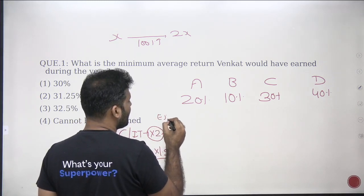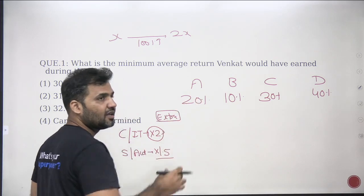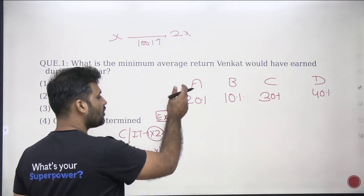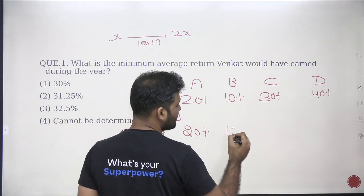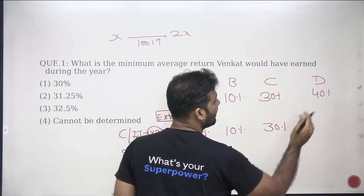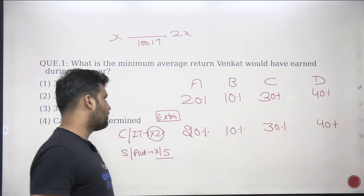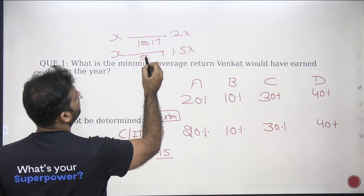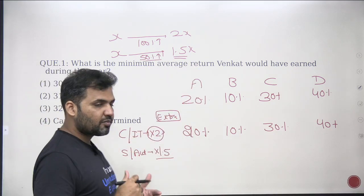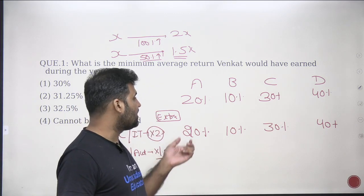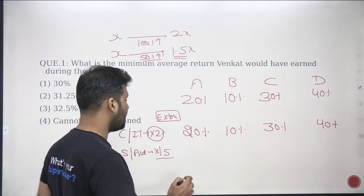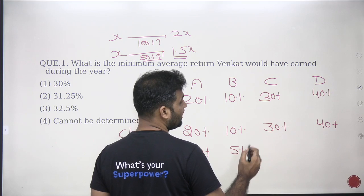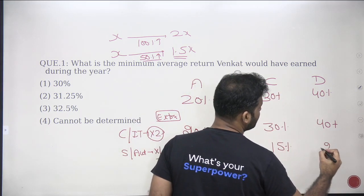Let's write down the extra returns. If company A is giving twice the result, the extra return from A is 20%; 100% of 10% is 10%; 100% of 30% is 30%; and 100% of 40% is 40%. If a company gives 1.5 times the return, the increment is 50% — so 50% of 20% is 10% extra, 50% of 10% is 5% extra, 50% of 30% is 15% extra, and 50% of 40% is 20% extra.